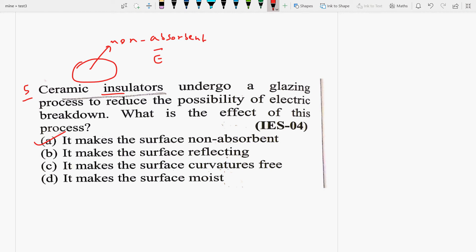It makes the surface non-absorbent because it makes the surface non-absorbent. When the surface tends to be non-absorbent, it will not absorb. So, this is because of this effect. When we finish the possibility of electrical breakdown and try to reduce the possibility of electrical breakdown, then Ceramic insulators are going to be glazing process. So, this effect will be non-absorbent.